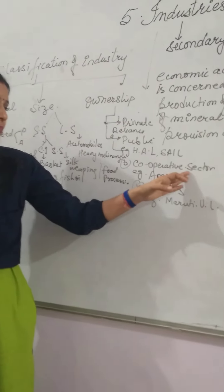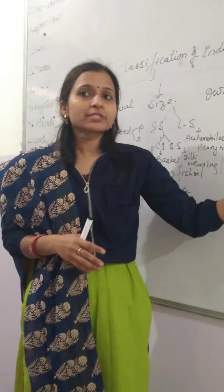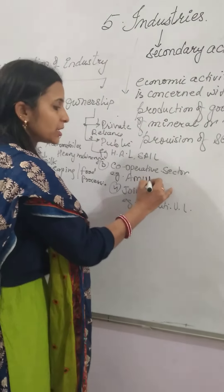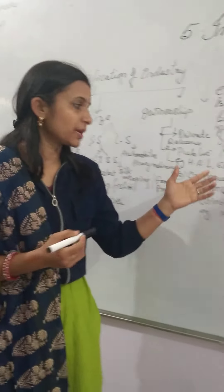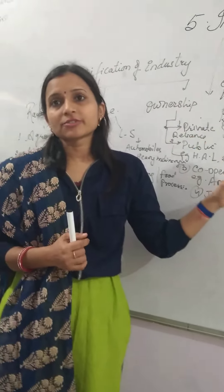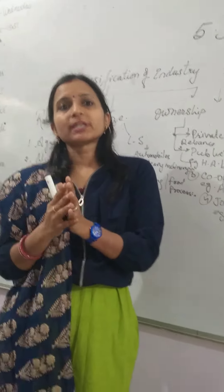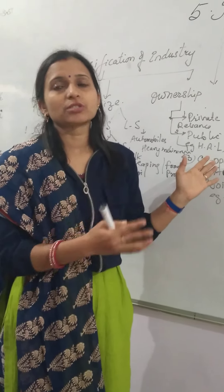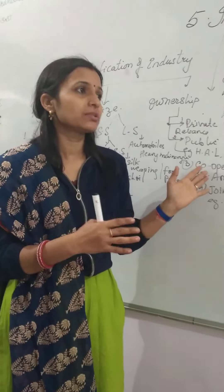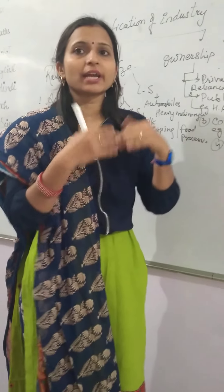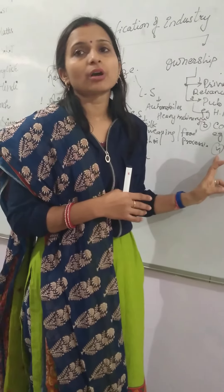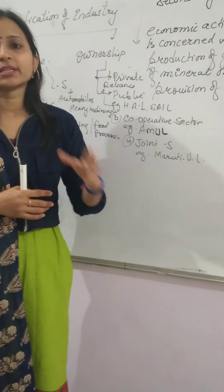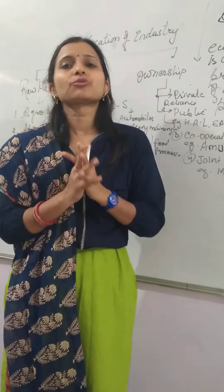The cooperative sector — an example is Amul, which stands for Anand Milk Union Limited, and Sudha is also an example of the cooperative sector. In these industries, the producers and profits belong only to those people who organized and established these industries, and they get all the benefits. The joint sector — an example is Maruti, which is established through a government-private partnership.